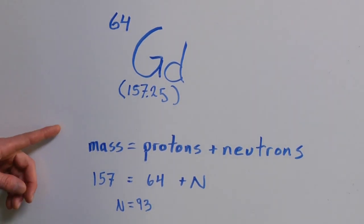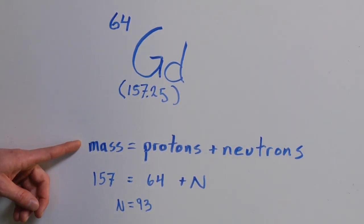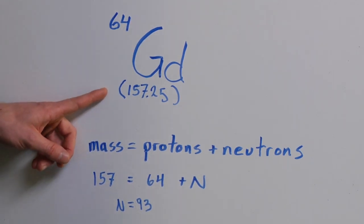Now, in order to find out the number of neutrons, the neutrons plus the protons equal the atomic mass. So our atomic mass is 157.25. Round that to the nearest whole number, 157.